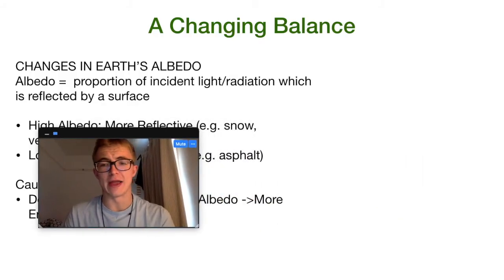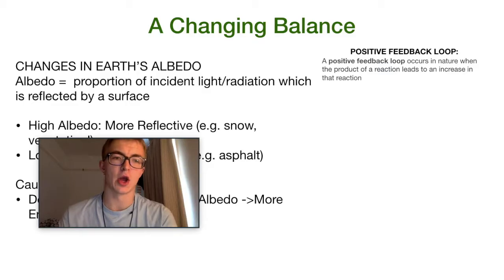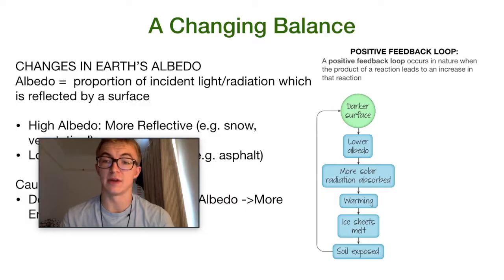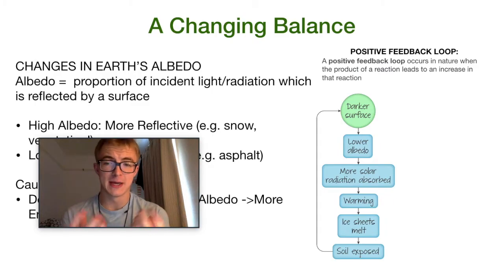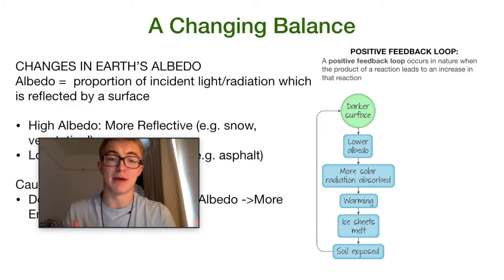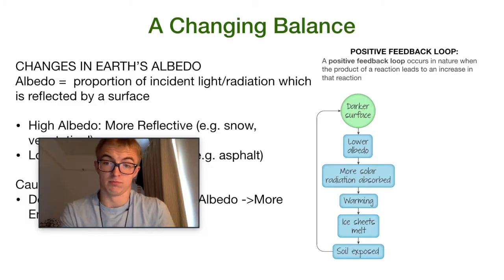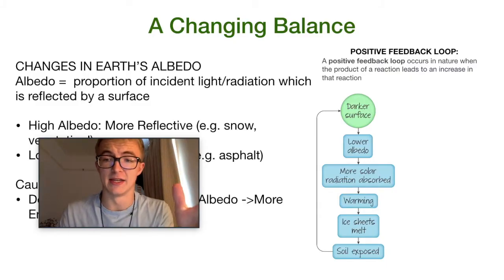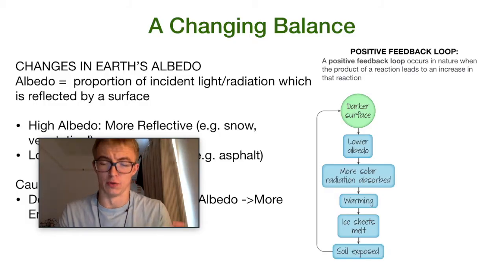A positive feedback loop occurs in nature when the product of a reaction leads to an increase in that reaction. If we're talking about albedo: let's say we have a darker surface with low albedo, so more of that solar radiation is absorbed. That solar radiation leads to warming, which can melt ice. Ice has a very high albedo; once melted it may expose soil, which has a lower albedo. That output shows we now have an even lower albedo, so the reaction continues. Positive doesn't mean a good thing — it just means an increase in the reaction due to its own output.